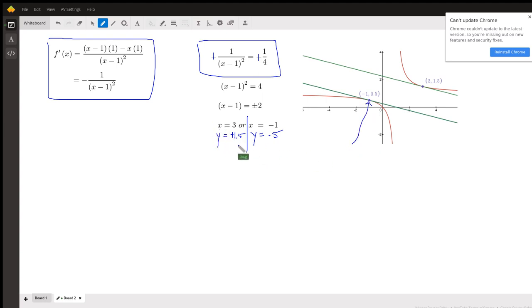But also, when x is 3 and y is 1.5, we have a line that's parallel to the first green line. What's the equation of this line?